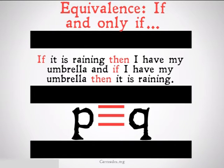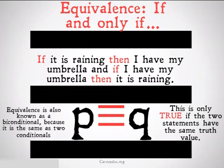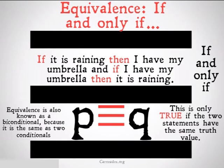then it is raining — that is what equivalence means. It is only true if the two statements have the same truth value. If they have different truth values — if one is true and one is false — the whole statement is going to be false. Equivalence is also known as a biconditional because it's the same thing as two conditionals, one going one way and one going the other way. It is often represented as 'if and only if,' which you can shorten to 'iff' with two F's.